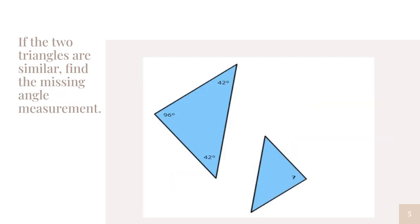Now looking at angle measurements, the two triangles are similar. Find the missing angle measurement, which is right here with the question mark. I need to look at what corresponds with one another. This would be 42 degrees, this would be 42 degrees, and right here would be 96 degrees. My missing side length is 96 degrees.